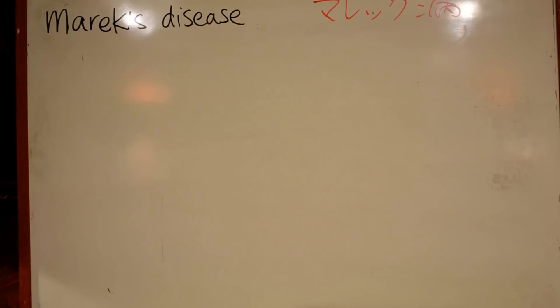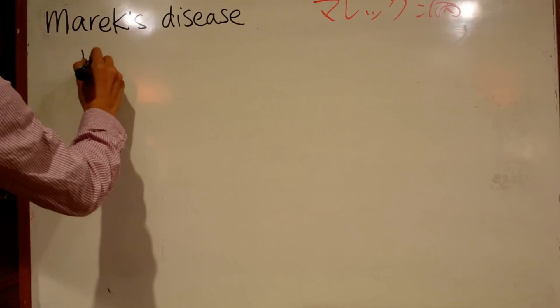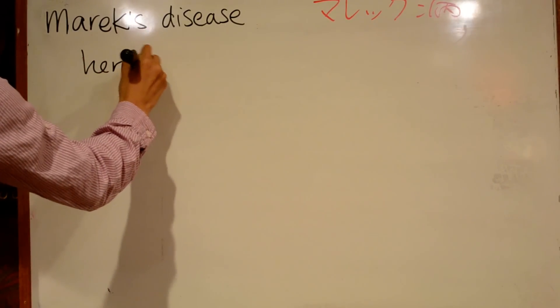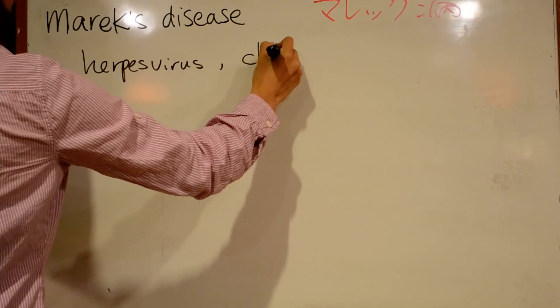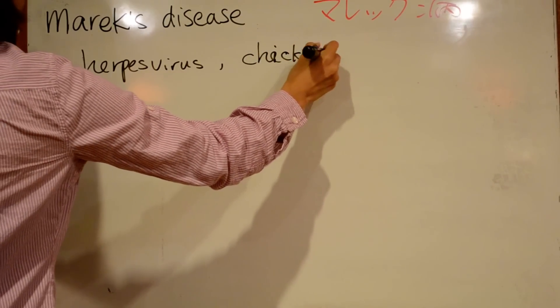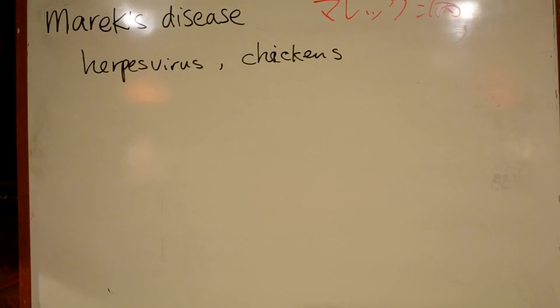Today's review is about Marek's disease. Marek's disease is a herpes virus infection primarily affecting chickens. It is endemic in the US and Canada.